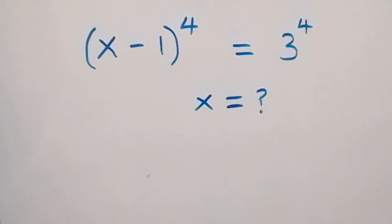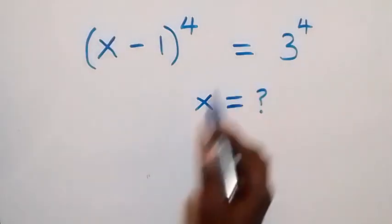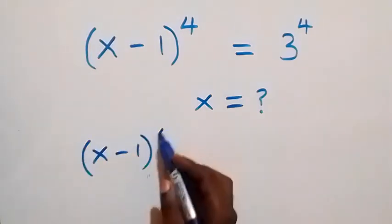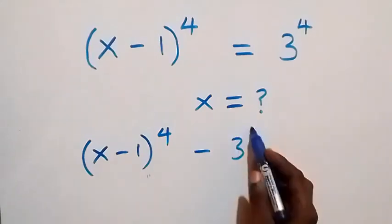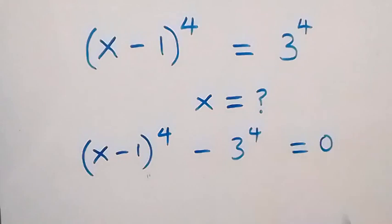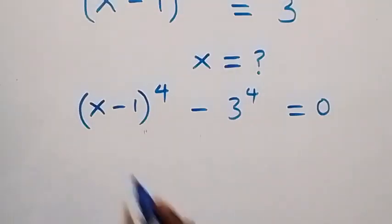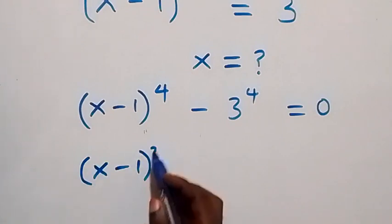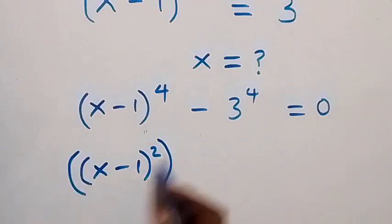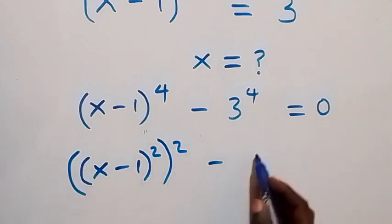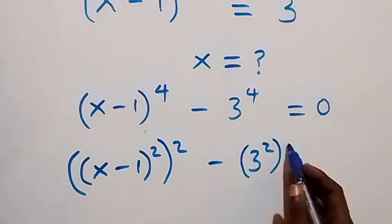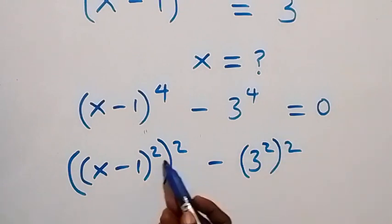Hello, you are welcome. How to solve for x in this nice exponential equation. Here we have 3 raised to power 4 on one side, and x minus 1 all raised to power 4, then minus 3 raised to power 4 equals zero. We can write this as x minus 1 squared, then all squared, minus 3 squared, then all squared, because two times two equals four.